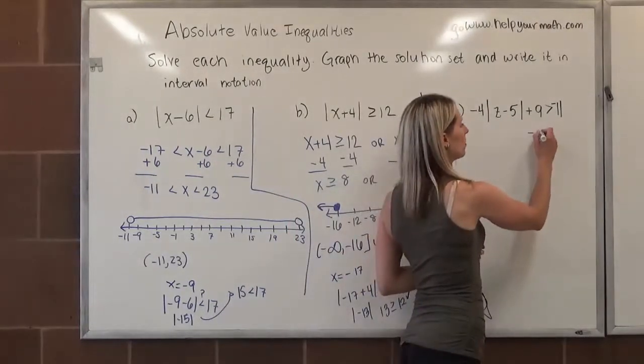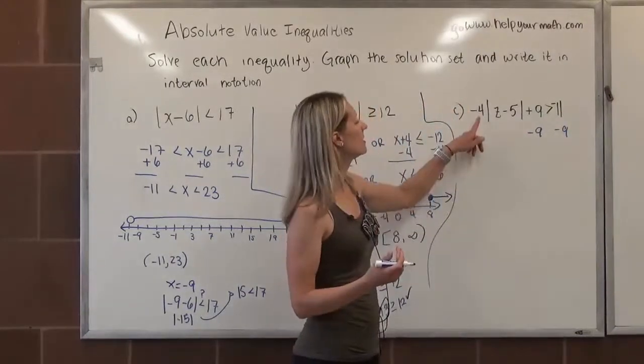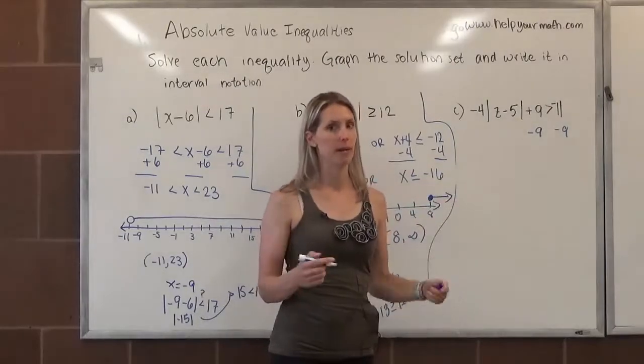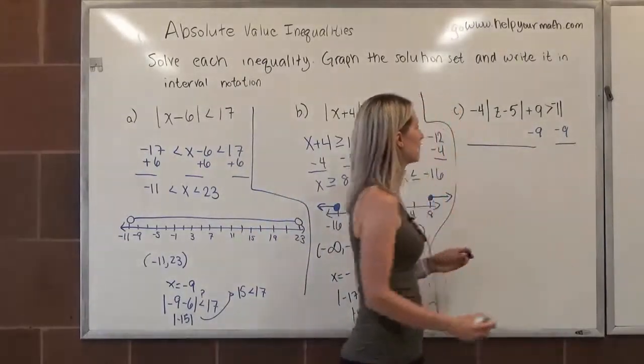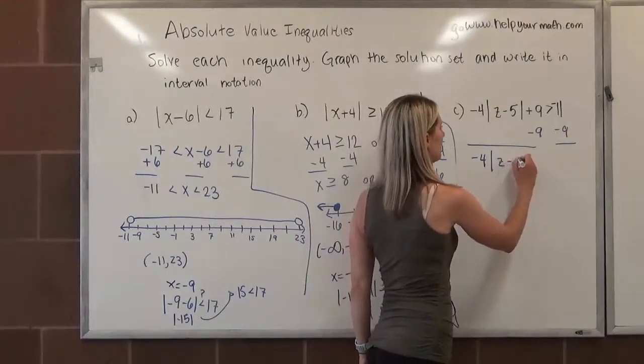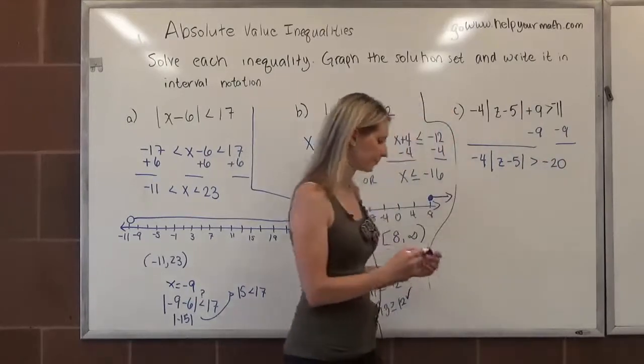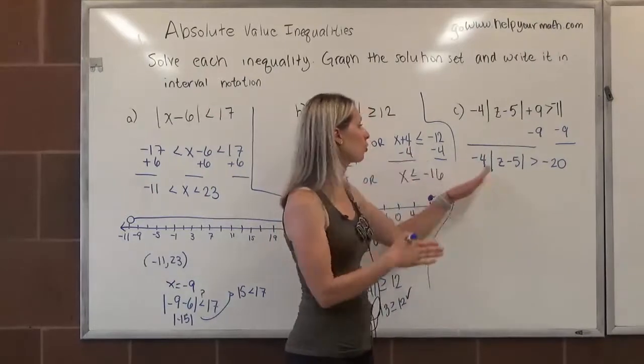First, we're going to subtract 9 from both sides. We treat the absolute value like it's a variable, and so if that was a variable, let's just say x. If it said negative 4 times x plus 9, the first thing you would do is take away 9. We do the same thing with our absolute value. So we're going to take away 9 from both sides. That's going to leave us with negative 4 times the absolute value of z minus 5 is greater than negative 20.